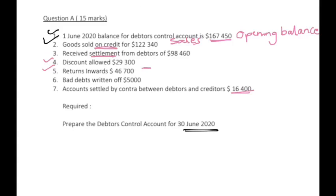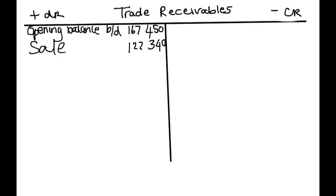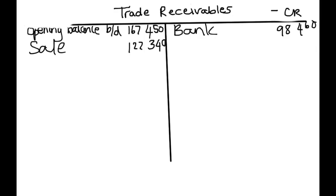Received settlement from debtors of $98,460 — these debtors settled their accounts and we are owed less, so this goes on the credit side. When people buy goods on credit, the more they owe us, so the more we put it on the debit side. Discount allowed of $29,300: when we allow discount, they pay us less because we have rewarded them for paying early, so this decreases how much they owe us.